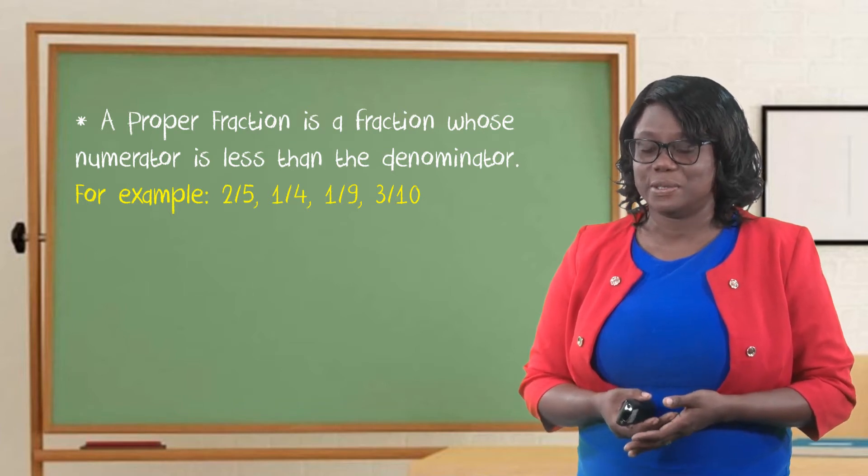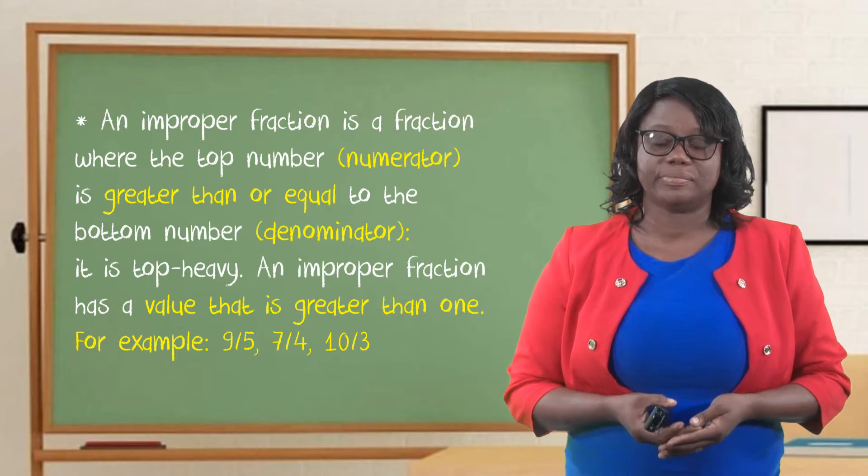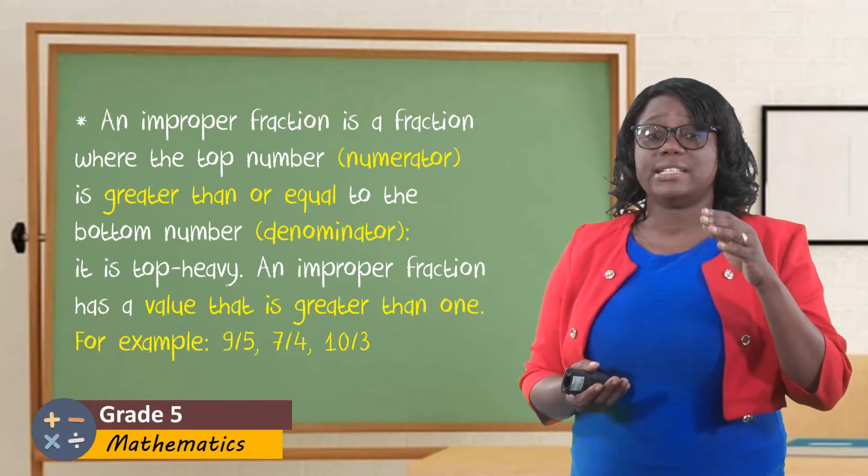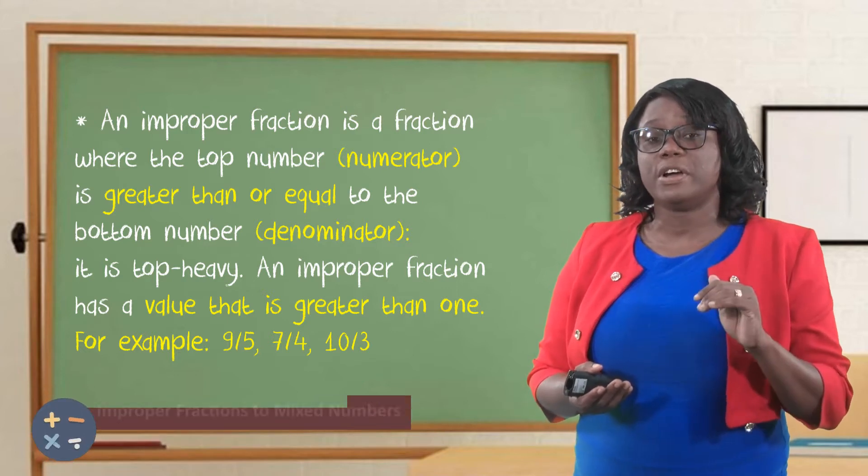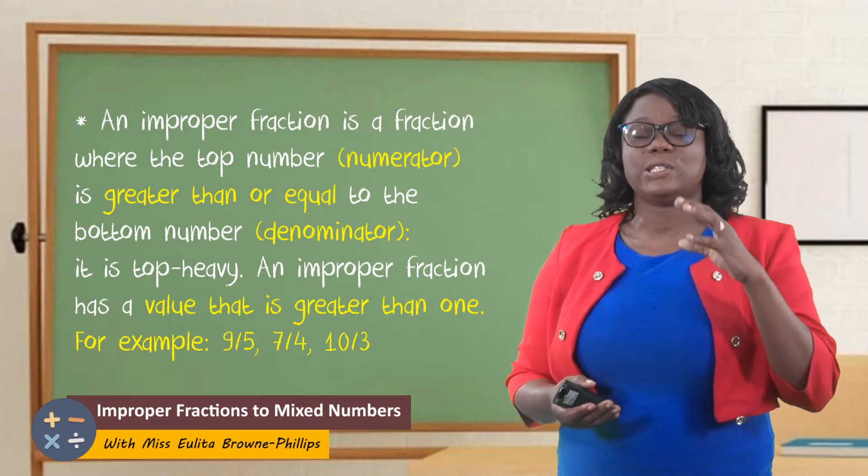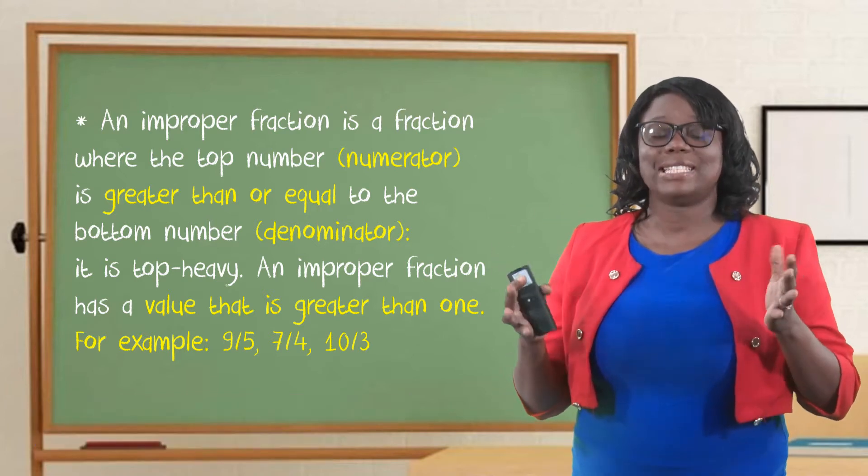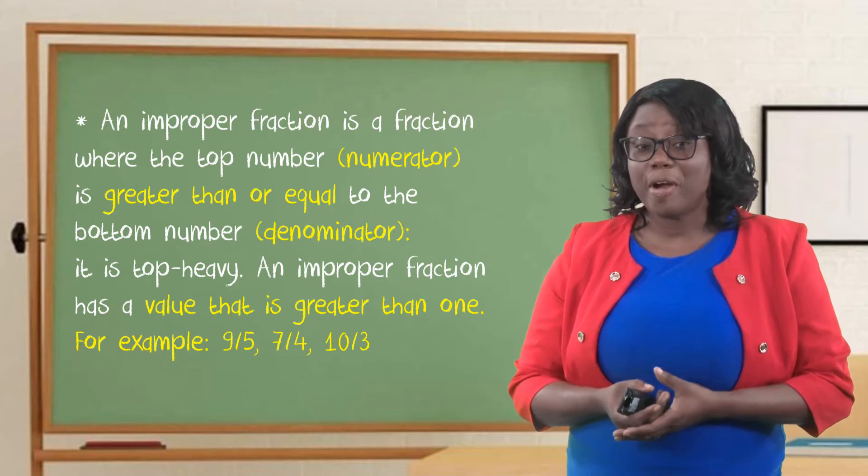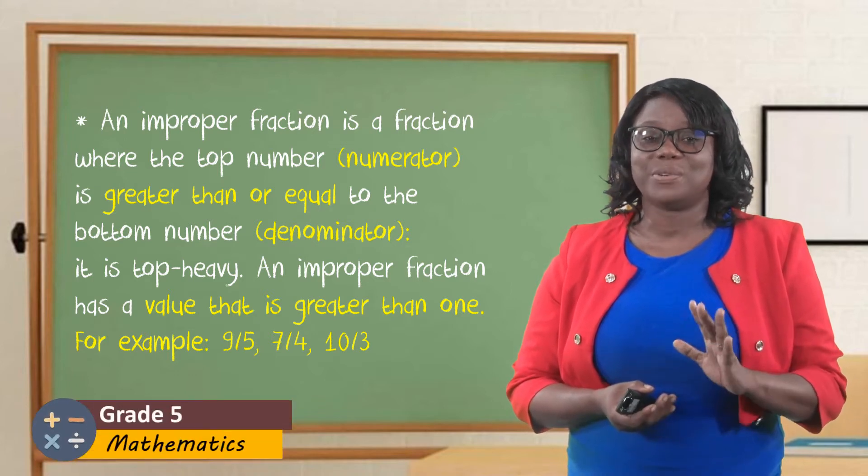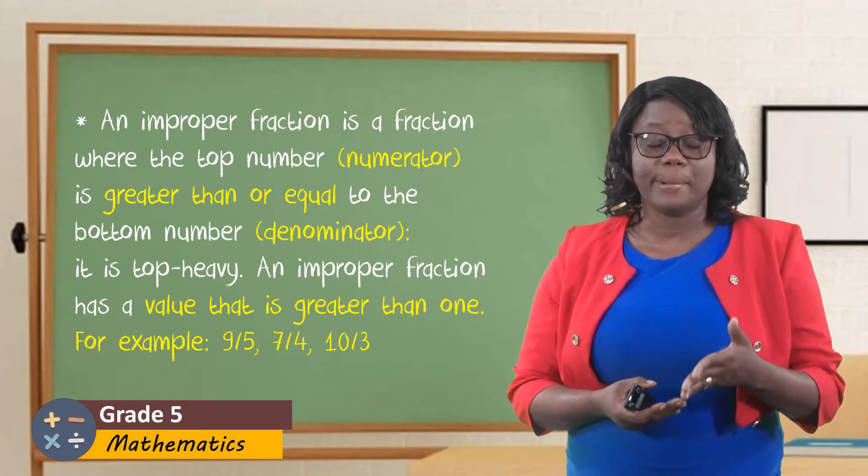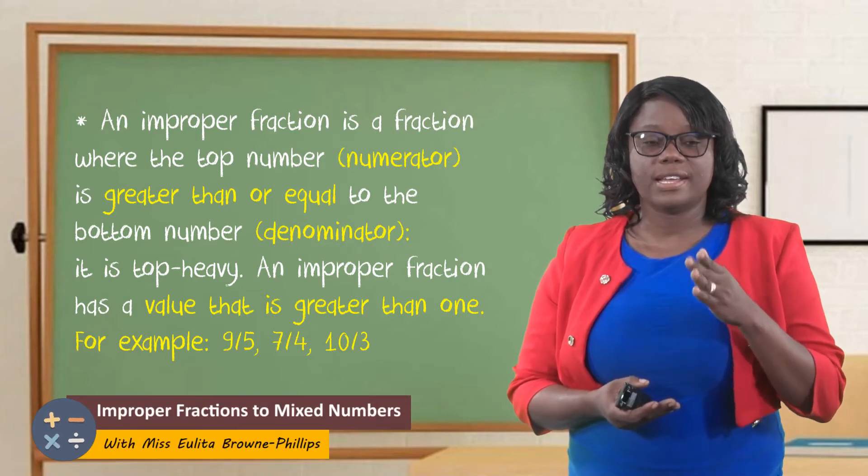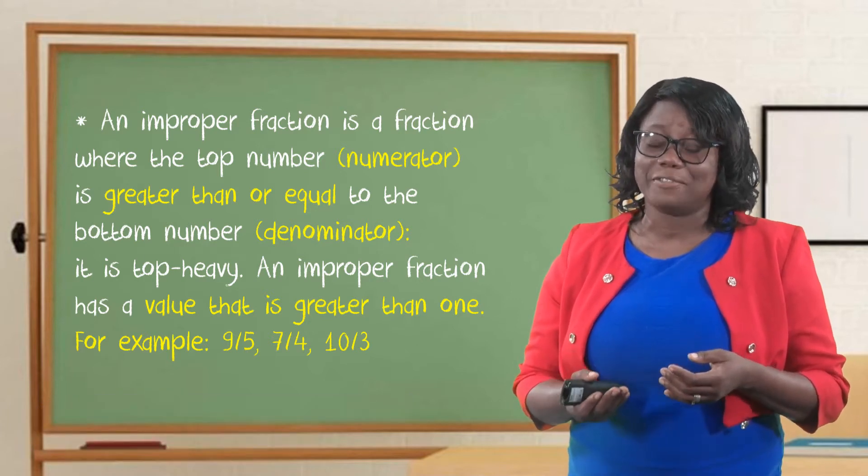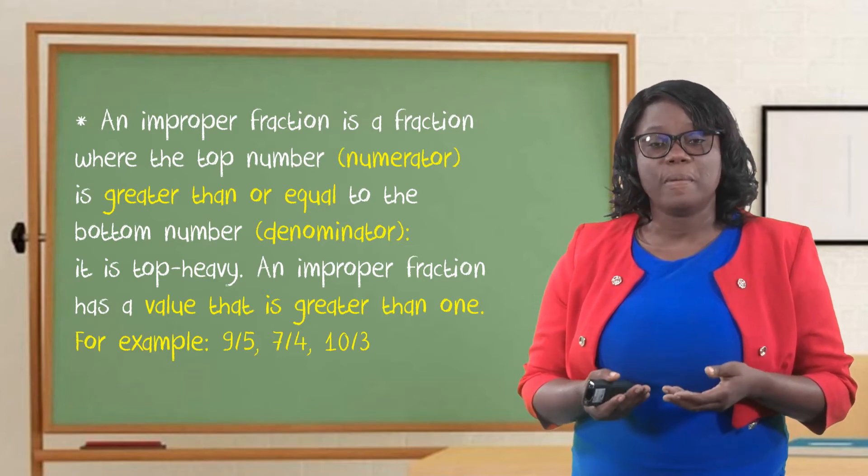An improper fraction is a fraction where the top number or the numerator is greater than or equal to the bottom number or the denominator. We say that it is top-heavy. We say that an improper fraction has a big head and a small body. An improper fraction has a value that is greater than one. Example: nine-fifths. Look at the numbers. Look at the numerator. The numerator is nine, and nine is greater than five. So, nine-fifths is an improper fraction.